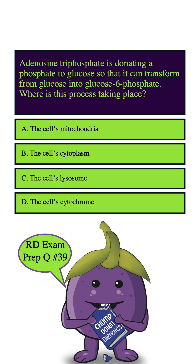Let's highlight our key words: adenosine triphosphate is donating a phosphate to glucose — where is this taking place? Starting with A, mitochondria is, as we all know, the powerhouse of the cell and it's involved in energy production. But the initial steps of glucose metabolism, specifically glycolysis, actually occurs in the cytoplasm, not the mitochondria. So we can eliminate this answer choice.